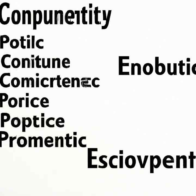Chapter Five of Economics in One Lesson also focuses on unseen costs and benefits. Hazlitt argues that when a decision is made, the seen costs and benefits are immediately apparent, but the unseen costs and benefits are often overlooked. Using the bridge example again, the seen benefits are the jobs created and the convenience, while the unseen costs are the resources that could have been used elsewhere, such as in the construction of a hospital or school. Hazlitt also discusses unintended consequences — the unforeseen results of an action — arguing they can often be more significant than the intended consequences.